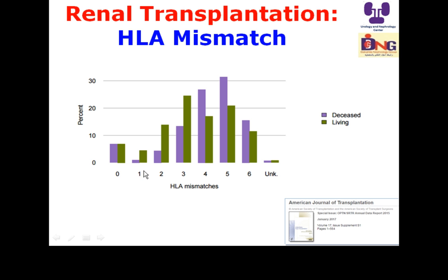The figure shows the frequency and percentage of mismatch from one through six. At our center, the Urology and Nephrology Center in Mansoura, we don't accept six mismatches — at least there should be matching at the DR locus. So the maximum mismatch we may accept is five out of six.